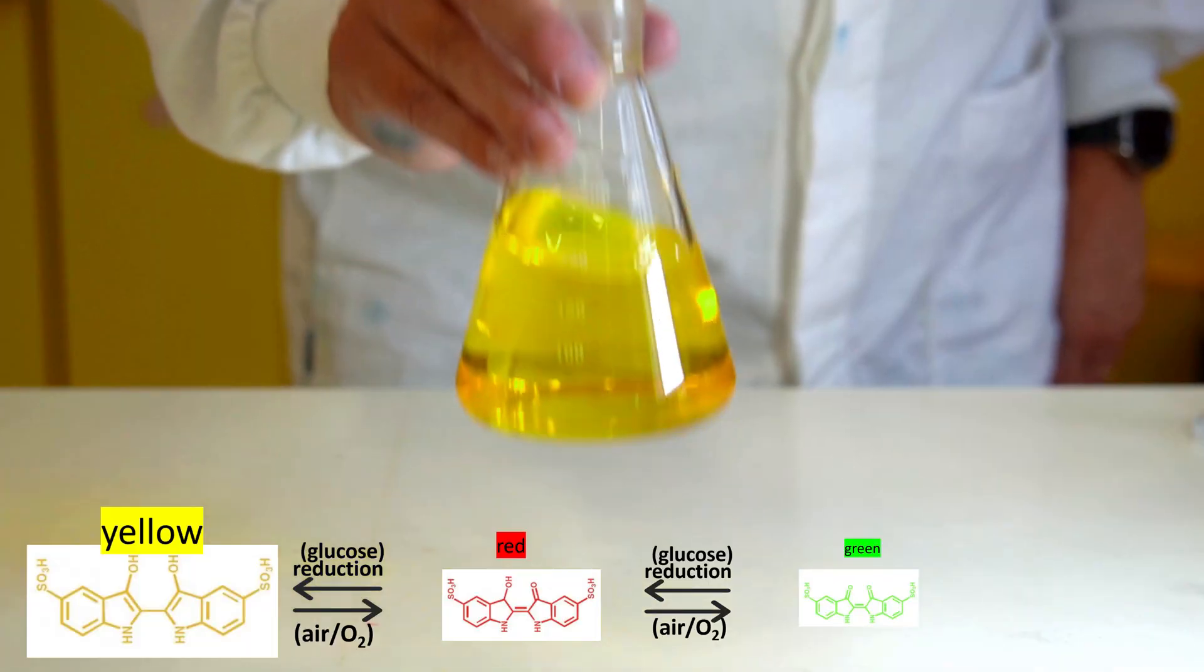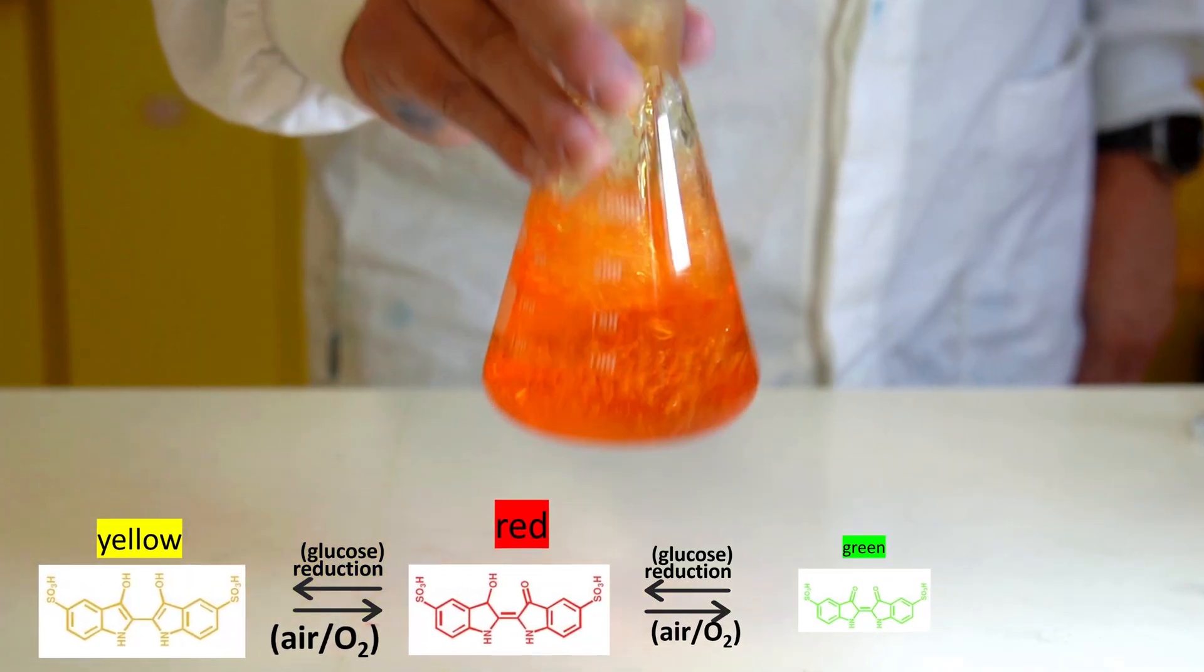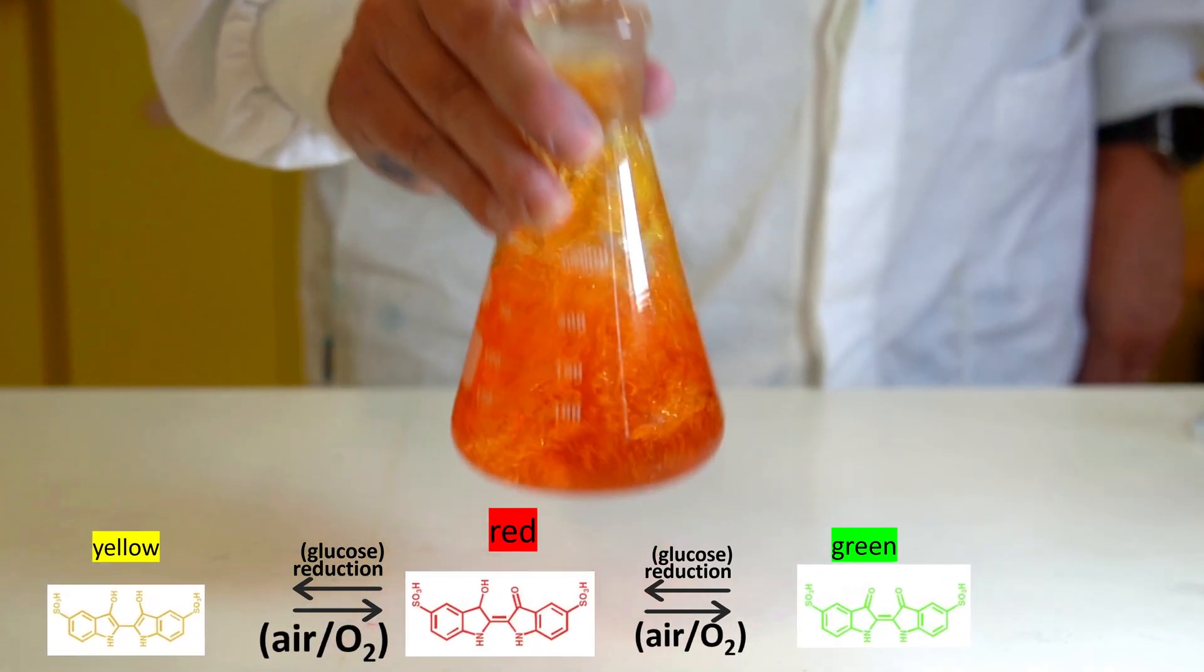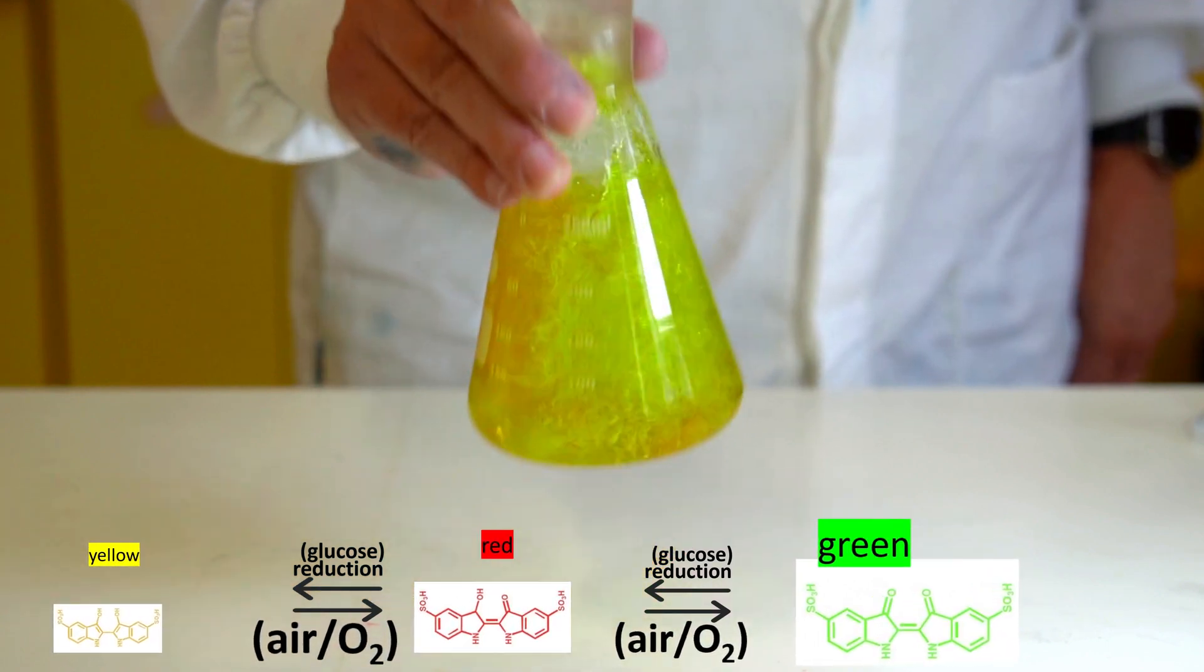Shaking introduces new oxygen molecules in the reaction, favoring equilibrium shift to the red indicator form. Vigorous shaking adds more oxygen and equilibrium shifts even more to the green indicator form.